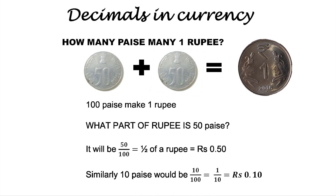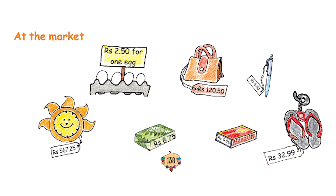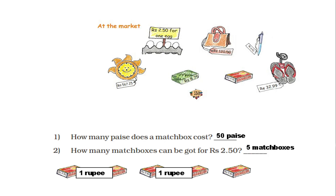Note how the paise is written in rupee. Let's go on to the next question. I want you to observe the items displayed and answer the questions. How many paise does a matchbox cost? It is 50 paise. How many matchboxes can you get for rupees 2.50? If one matchbox costs 50 paise, two matchboxes will cost 1 rupee, four will cost 2 rupees. Therefore, you can buy five matchboxes for rupees 2.50.